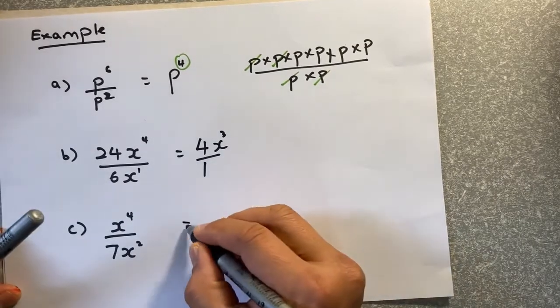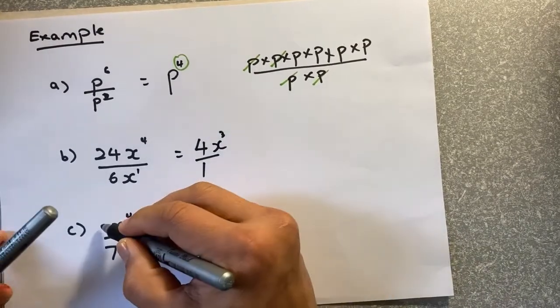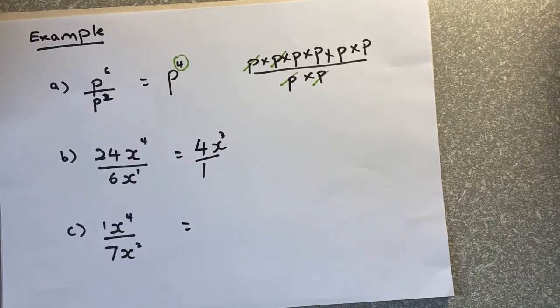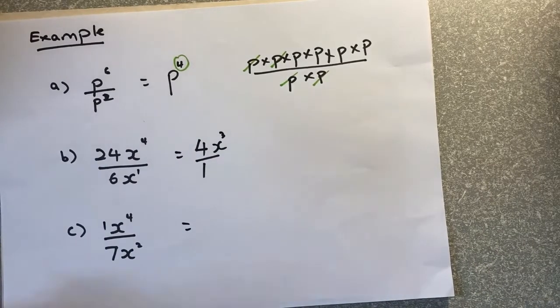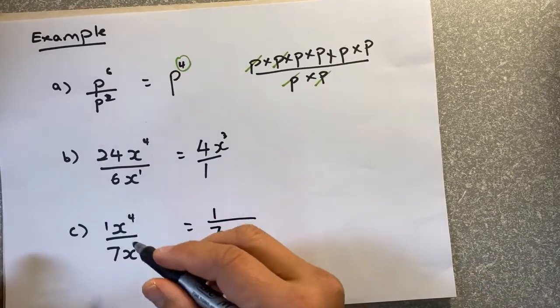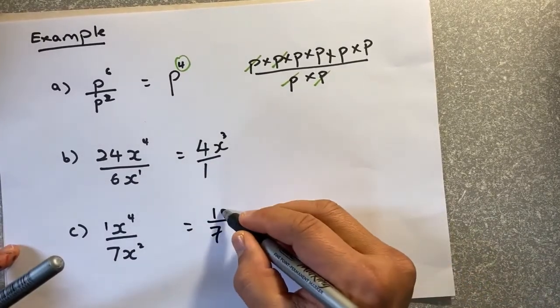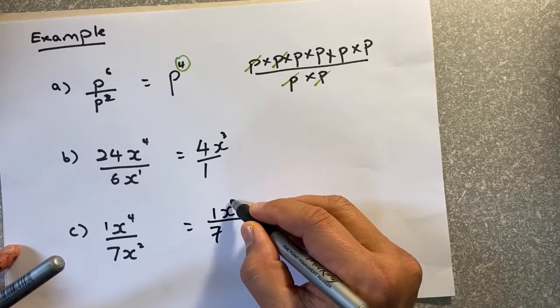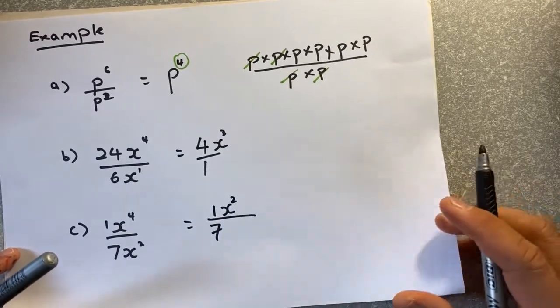The next one is interesting. There's no number in front of x, so it's actually 1 over 7. If you put in a calculator, you cannot simplify. So the numbers remain 1 over 7. And then x4 divided by x squared is simple. x4 minus 2 is going to be squared.